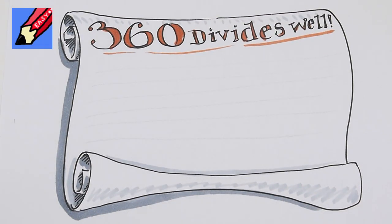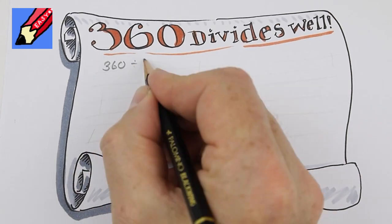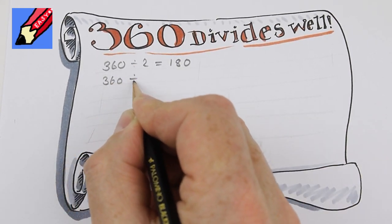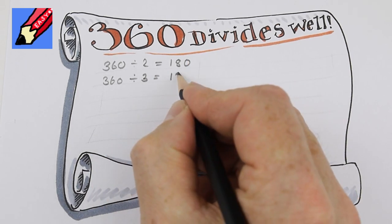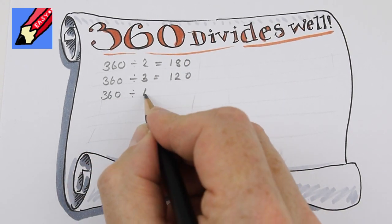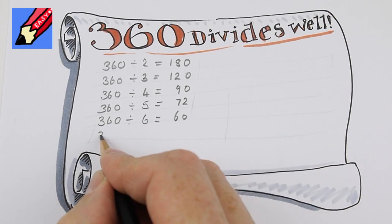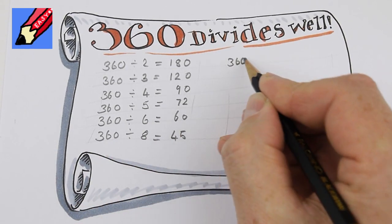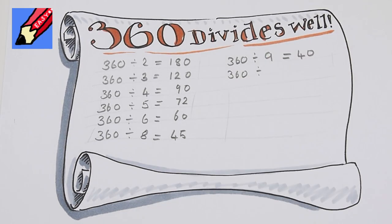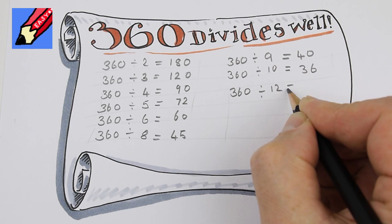360 divided by 2 equals 180. Divided by 3 equals 120. By 4, 90. By 5, 72. By 6, 60. By 8, 45. By 9, 40. By 10, 36.